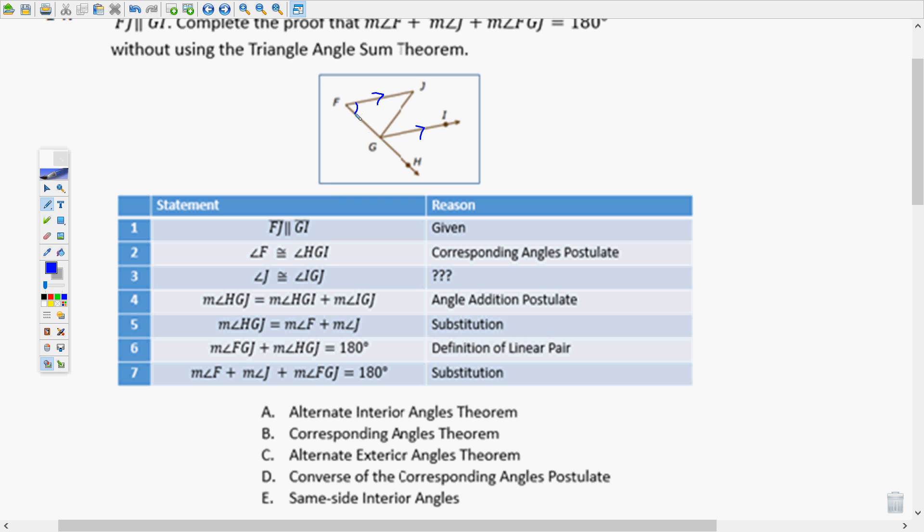Angle F is congruent to angle HGI. Those are corresponding angles and those are congruent when lines are parallel. Then we have angle J is congruent to angle IG.